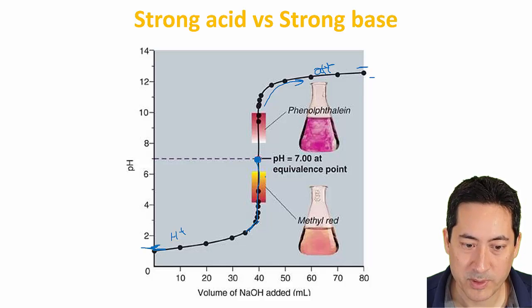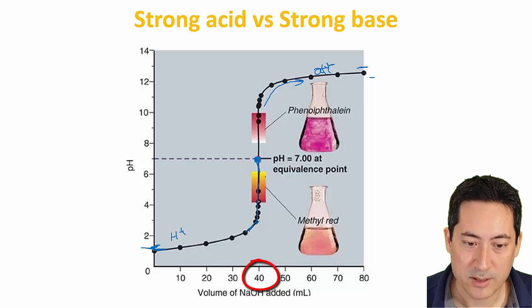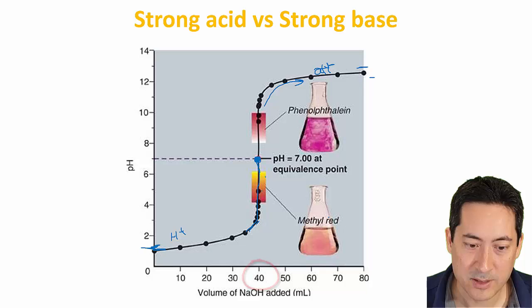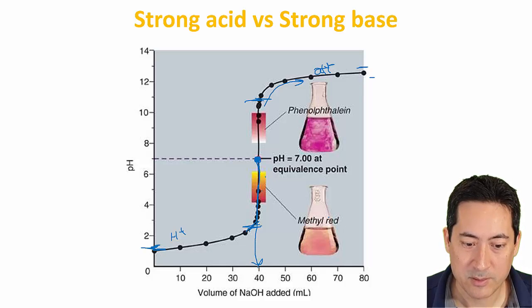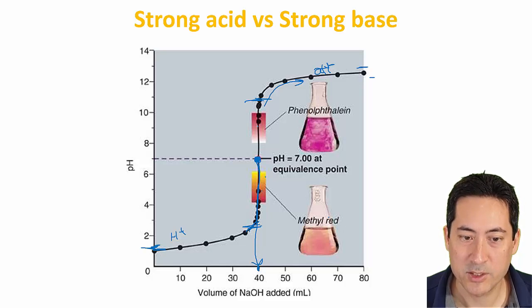The equivalence point is where the reaction has been completed. You can use either of these indicators to indicate that, because it has a huge pH jump from 2 to 11 basically. That gives you a huge range of indicators that can detect changes between 2 and 11. At somewhere between 40 mils, all of a sudden it changes color, because there's a huge pH change.